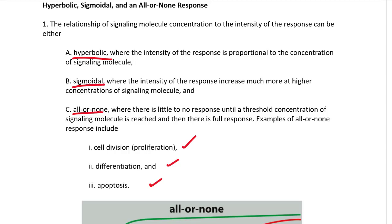Same thing for differentiation — either the cell goes ahead and specializes, or it does not. And apoptosis, where the cell makes a decision to go through programmed cell death.